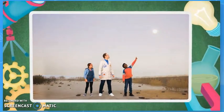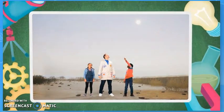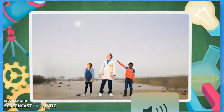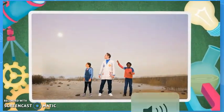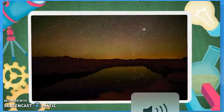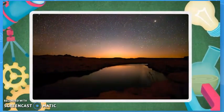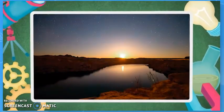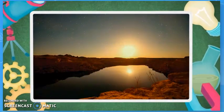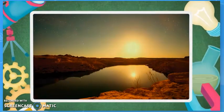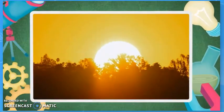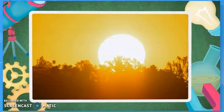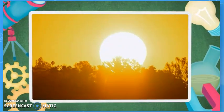Today, we'll learn that the sun rises in one part of the sky and sets in another part. The moon and stars also rise in one part of the sky and set in another part. These movements are patterns because they repeat each day.